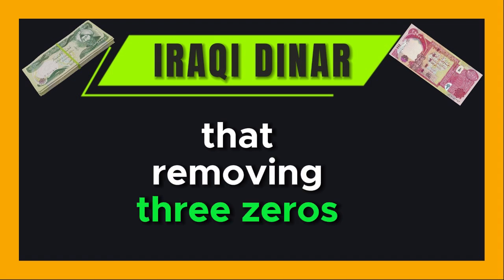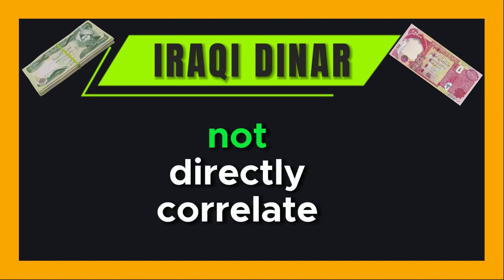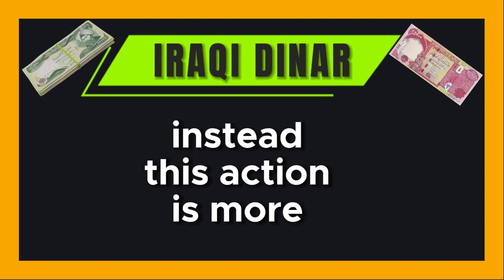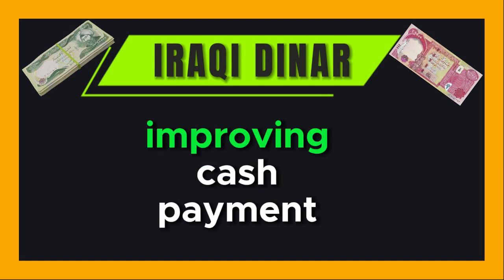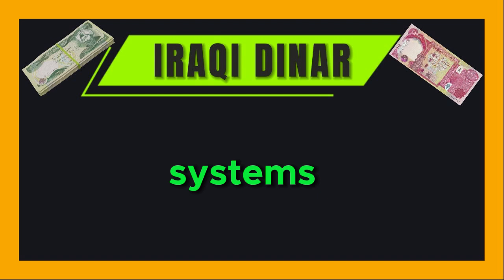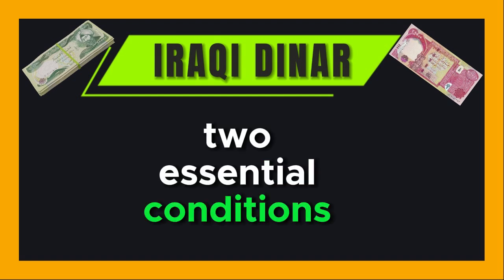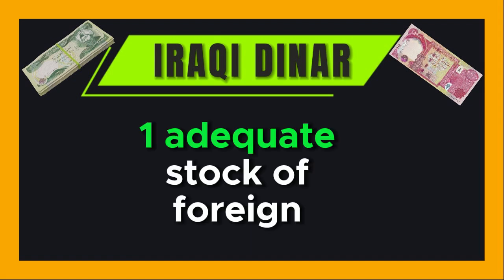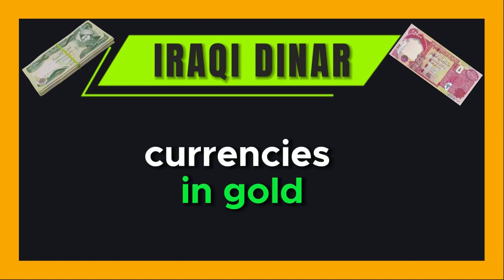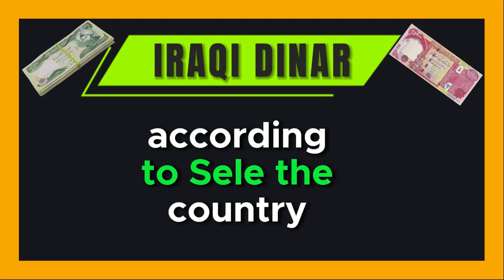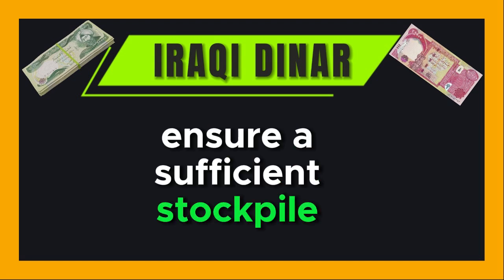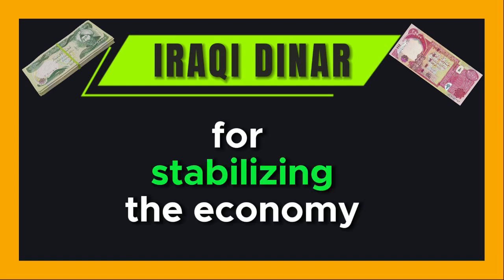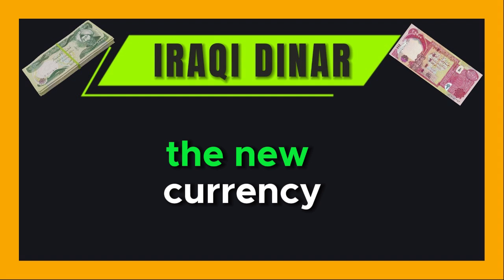Saleh clarified that removing three zeros from the currency does not directly correlate with the value of the currency itself. Instead, this action is more closely associated with improving cash payment systems. The advisor outlined two essential conditions that must be achieved before the government could proceed: one, adequate stock of foreign currencies and gold. The country needs to ensure a sufficient stockpile of foreign currencies and gold reserves, which is crucial for stabilising the economy and supporting the value of the new currency.